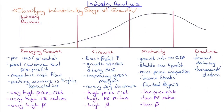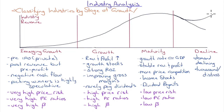We can also classify industries by stage of growth using an industry life cycle. Plotting industry revenue over time, we see: emerging growth, then growth, then maturity, and potentially decline — or possibly a turnaround with another growth spurt. Emerging growth companies are typically pre-IPO, mostly private, may be post-revenue but pre-profit, and tend to have negative cash flow. Picking winners here is highly speculative, with very high price risk, very high P/E ratios, and very high betas.